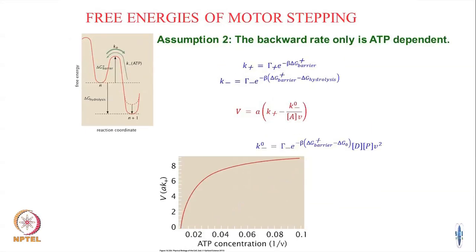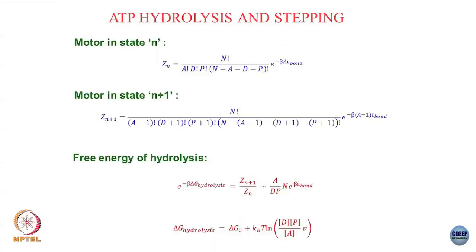How about the other limit? You can say that only the backward rate is ATP-dependent, which means I keep the left part of my free energy landscape fixed and change the depth of this minimum. So k minus becomes a function of ATP while k plus stays constant.